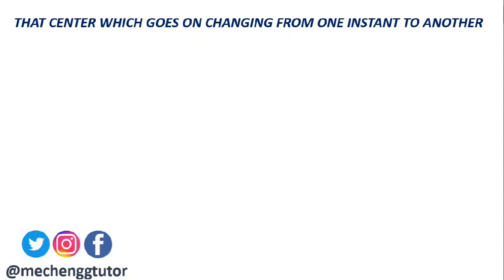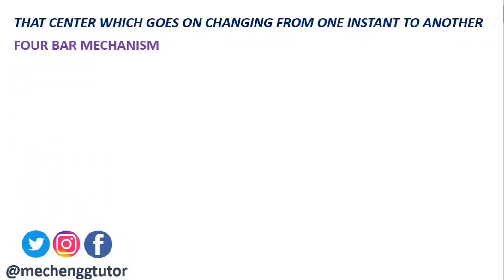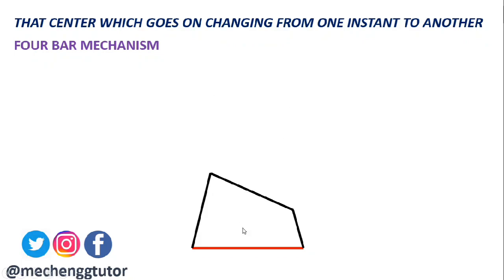First, let us look at the four-bar mechanism. We construct this mechanism by taking the fixed link, then constructing the second link, the third link, and the fourth link. These four links together constitute a four-bar mechanism because one of the links remains fixed.